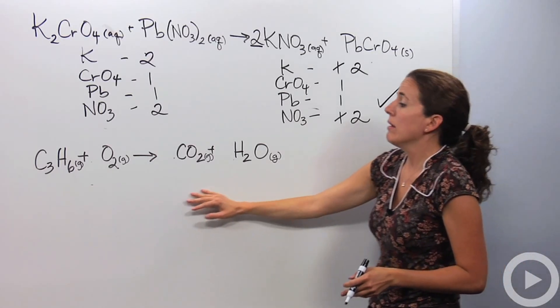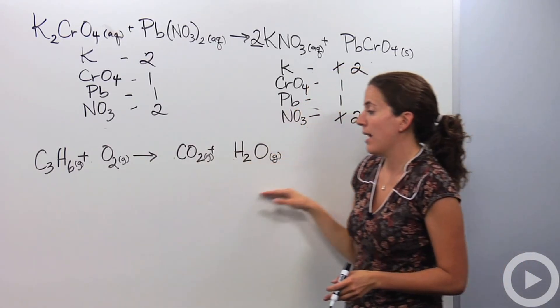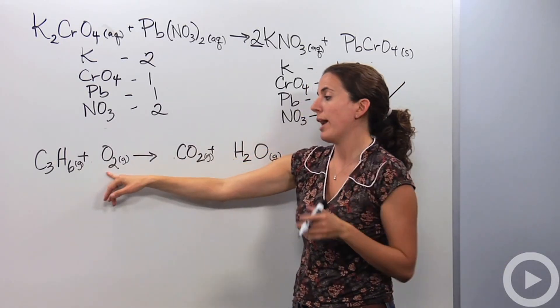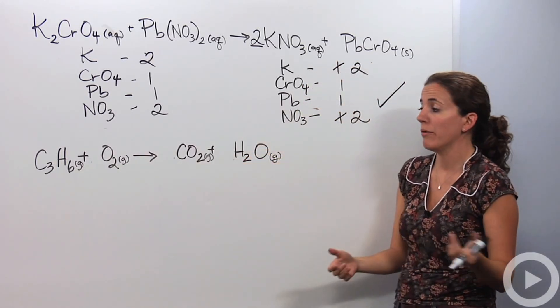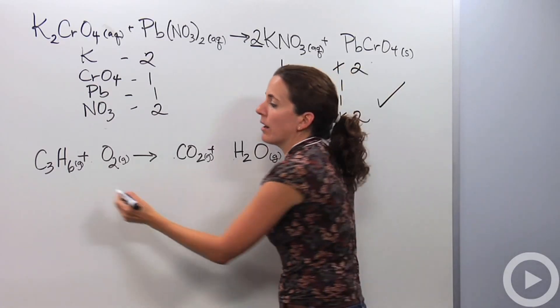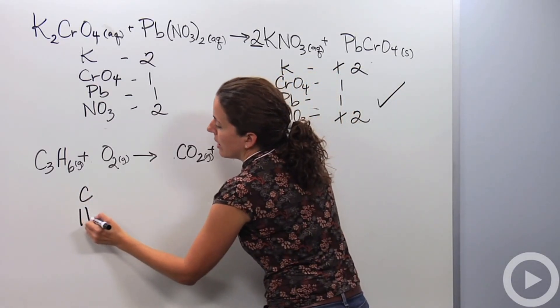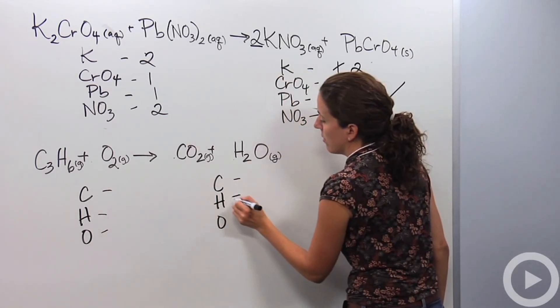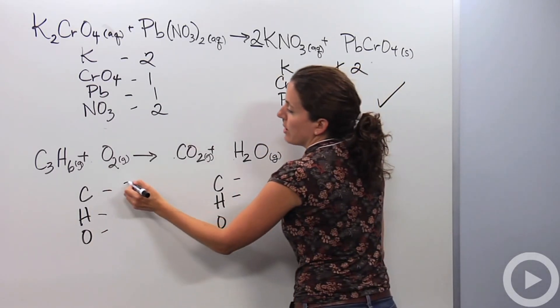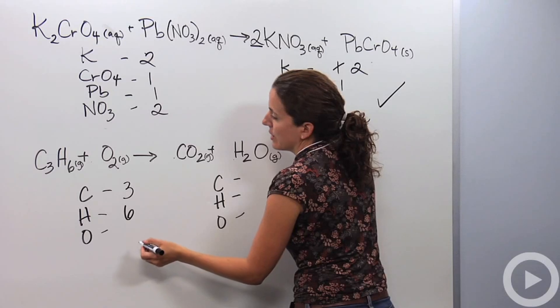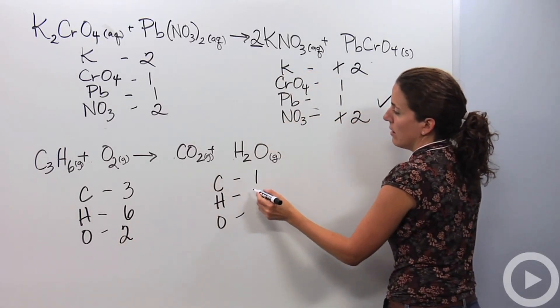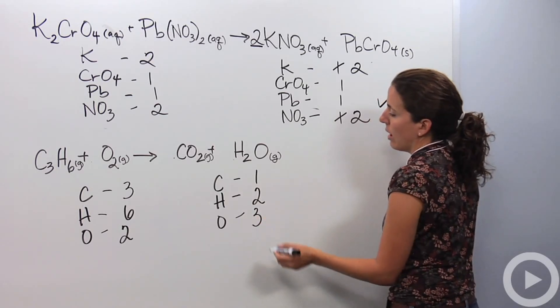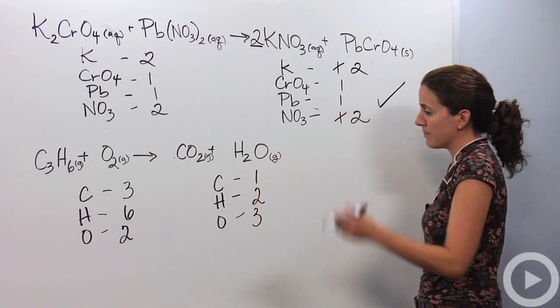Let's look at something a little bit more complicated. Let's look at this reaction here. So we have C3H6 reacts with oxygen gas to produce CO2 plus H2O. All right, let's see what we've been doing. Writing our elements out: C, H, and O. C, H, and O. We have three carbons, we have six hydrogens and two oxygens. We have one carbon, we have two hydrogens, three oxygens.